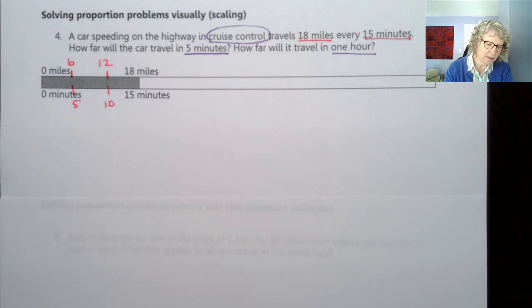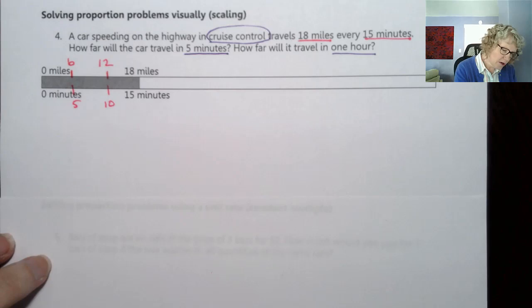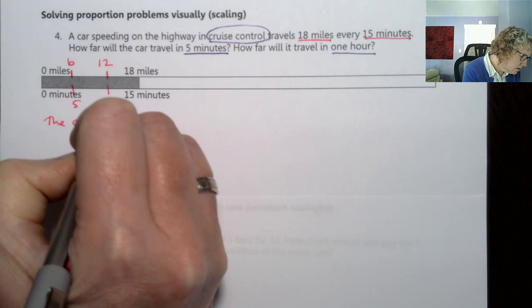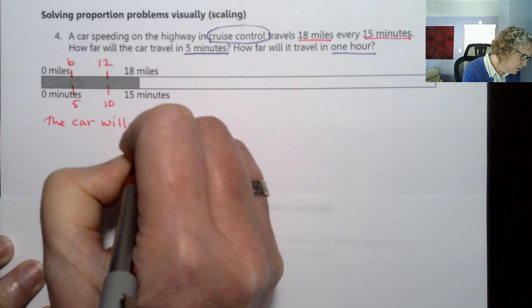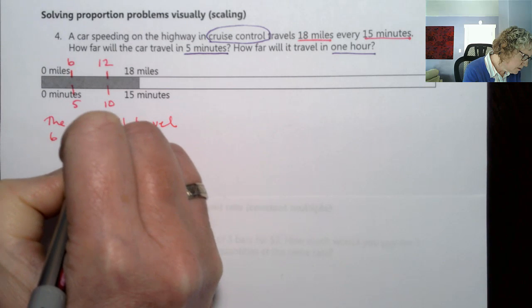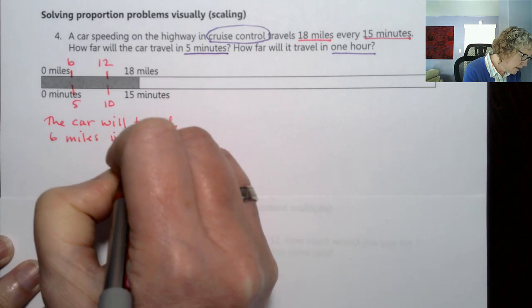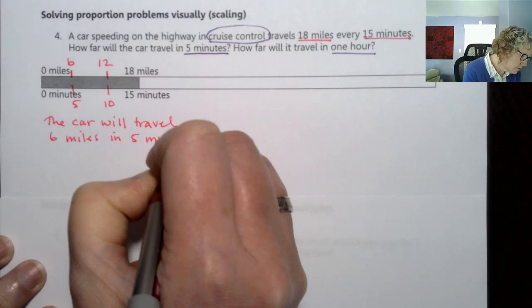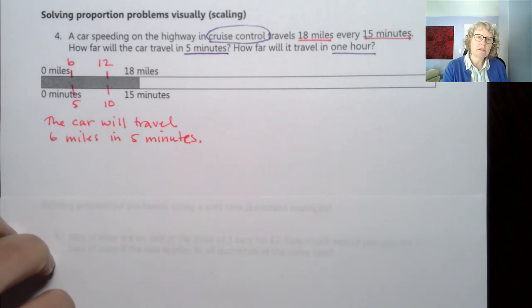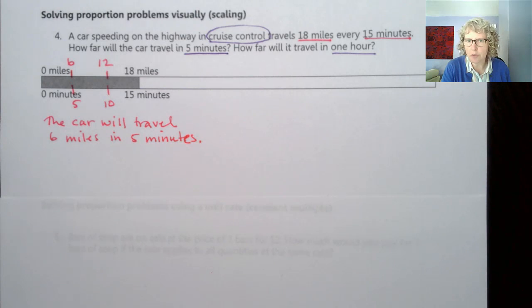Now we can see that 5 minutes corresponds to 6 miles. So the car will travel 6 miles in 5 minutes, because we're saying it's a constant speed so these quantities are proportional to each other.